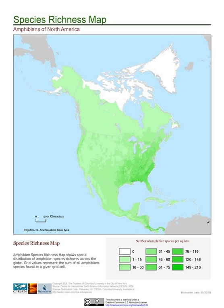On small scales, the pattern of distribution among individuals in a population may be clumped, regular, or random.